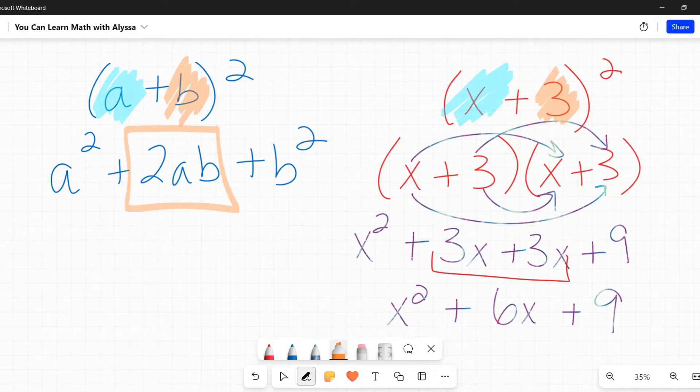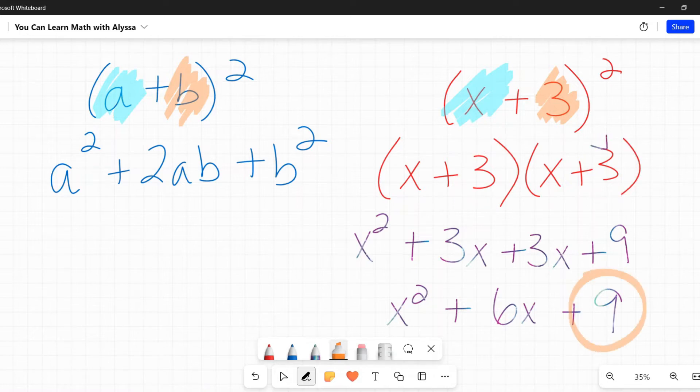So if A is the first one, that's x. And then B is my second one, so that is 3. That means my first term should have been A squared, or x squared. Then my middle term should have been 2 times A times B. So 2 times x times 3 is 6x. And then finally, B squared, 3 squared is 9.